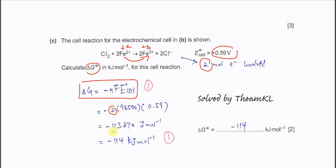You get 113,870. Remember, after you use this equation, the units you get is joules per mole. You have to divide by 1000 to convert joules to kilojoules. At the end, you get negative 114 kJ/mol.